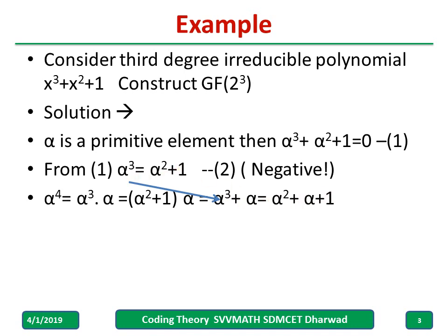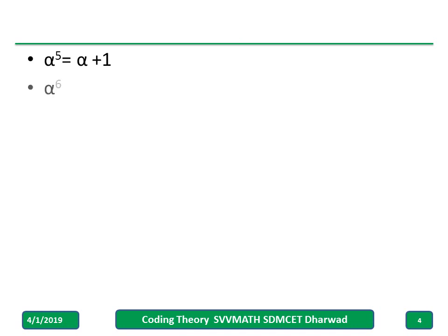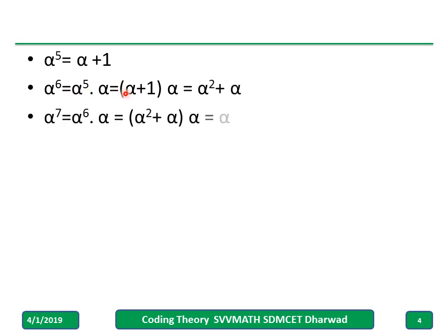Rewriting alpha raised to 4. Similarly, alpha raised to 5 equals — I rewrite the value of alpha raised to 4 and multiply by alpha, reducing this. I get alpha plus 1 because alpha squared plus alpha squared equals 0 in mod 2. And alpha raised to 6 equals alpha raised to 5 times alpha, which becomes alpha squared plus alpha.